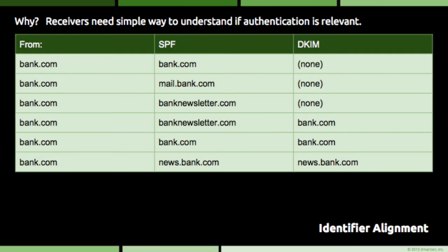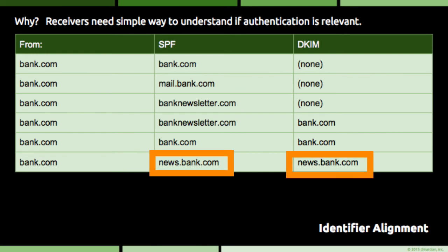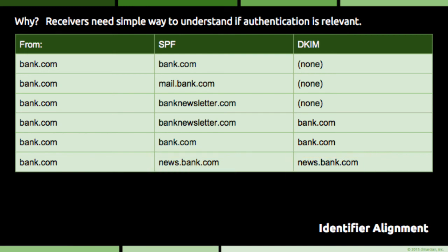This sixth example shows the same scenario, but with news.bank.com as the authenticated identifier for both SPF and DKIM. It's fairly common practice for large organizations to delegate a subdomain to an email service provider so the provider can send email on behalf of the organization. In this example, the owners of bank.com might have delegated the news subdomain to their marketing vendor so the vendor can send DMARC-compliant email using bank.com.